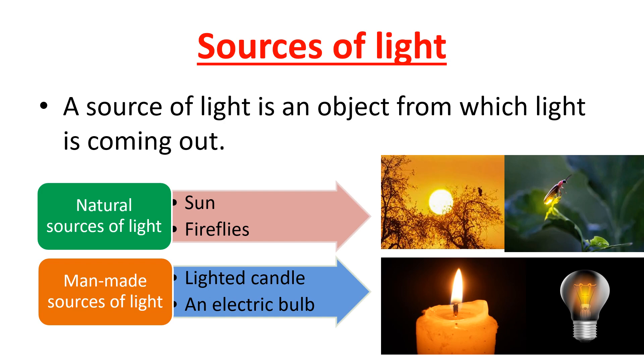Sources of light. A source of light is an object from which light is coming out. There are two types. First is the natural source of light, for example, the sun and the firefly. Second is the man-made sources of light, and the examples are lightened candle and an electric bulb.